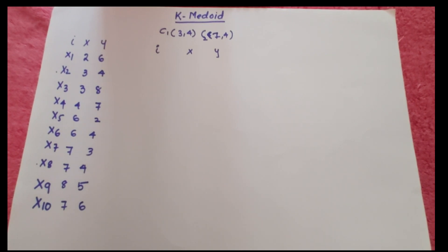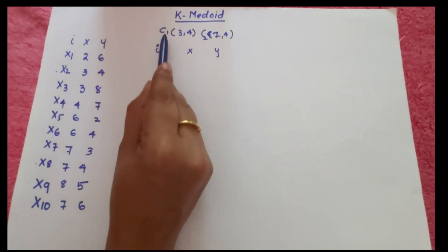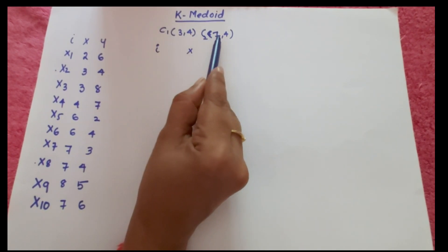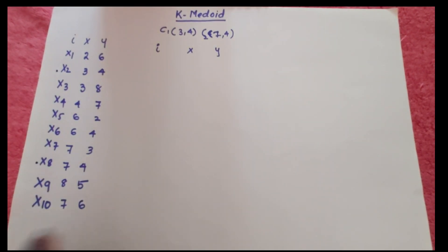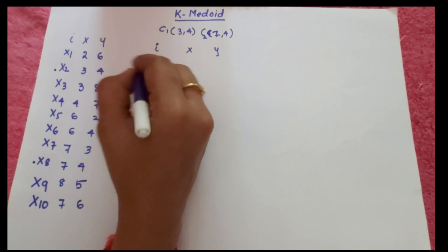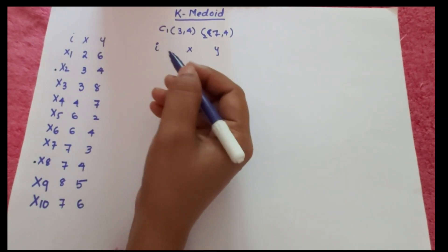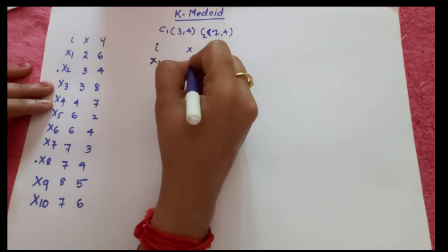According to the K-Medoid algorithm, first we arbitrarily choose K objects as initial medoids. We choose two medoids: C1 = (3,4) which is X2, and C2 = (7,4) which is X8. Since X2 and X8 are medoids, we exclude them from the remaining data points. We then list the remaining points: X1(2,6), X3(3,8), X4(4,7), X5(6,2), X6(6,4), X7(7,3), X9(8,5), X10(7,6).